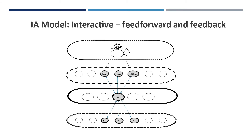Another key concept in the IA model is that movement through the steps of word processing is interactive, meaning that there is both a feedforward and a feedback flow of information. It is not a unidirectional process.